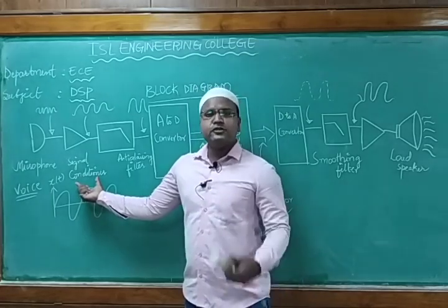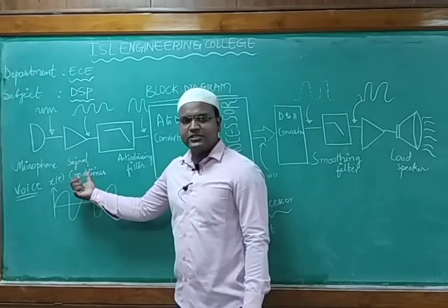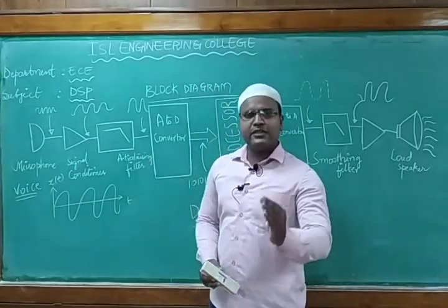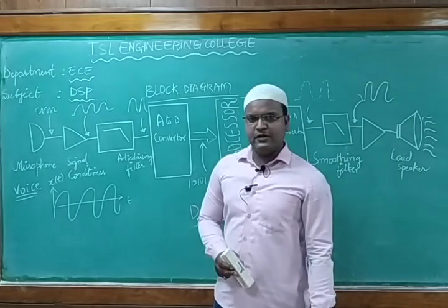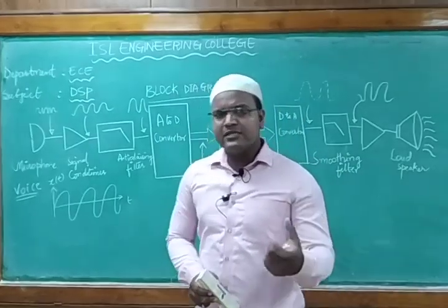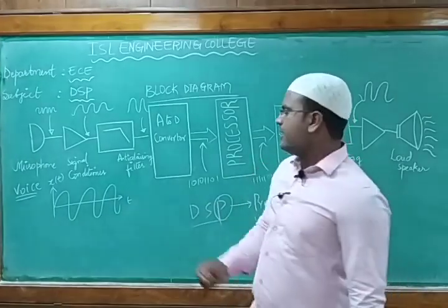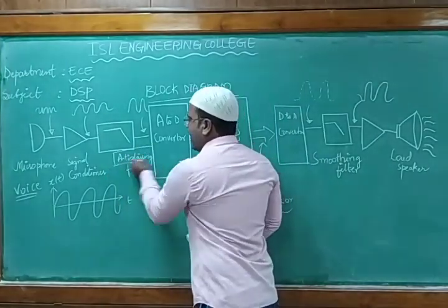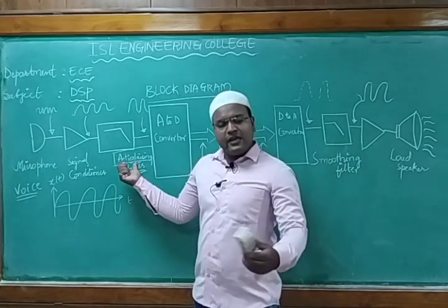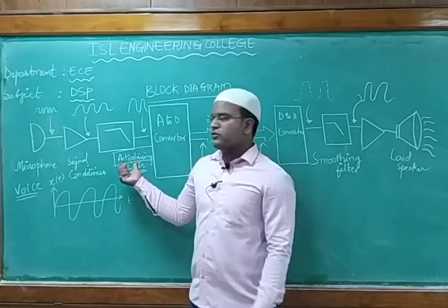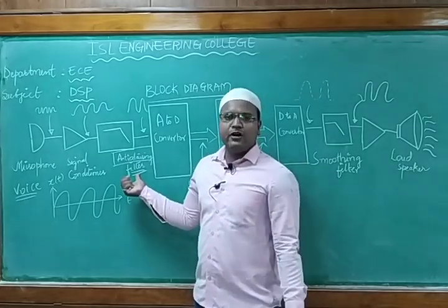What is the use of the signal conditioner? It is used to convert the desired signal from an undesired signal. From the signal conditioner, the signal is passed to a filter. What is the use of the filter? It will take the desired signal and try to eliminate the unwanted signal. Like when we hear from a loudspeaker, we may hear some noise along with our signal — that noise is your unwanted signal. You try to remove it and get the desired signal. That is done using an anti-aliasing filter. We will cover designing of anti-aliasing filters in detail in Unit 4.